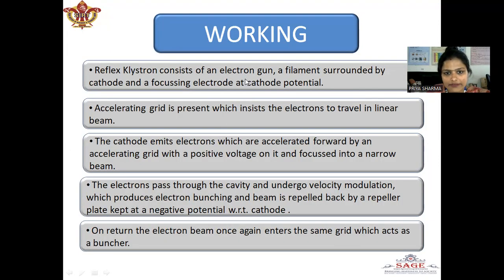Reflex klystrons consist of an electron gun, a filament surrounded by the cathode and a focusing electrode at the cathode potential. An accelerating grid is present which ensures the electrons to travel in a linear beam. The cathode emits electrons which are accelerated forward by an accelerating grid with a positive voltage on it and focused into a narrow beam.